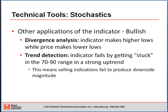Applications of the indicator that are bullish also include divergence analysis. This is a little bit more sophisticated and not as common with stochastics. Generally, divergence only occurs on the bull side of stochastics. What divergence means is an indicator makes a higher low while price makes lower lows. We've also discussed trend detection — the indicator starts to fail by getting stuck in the 70–90 range in a strong uptrend in a bull market.